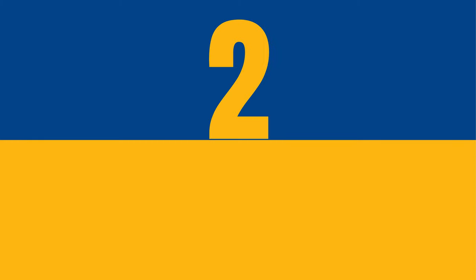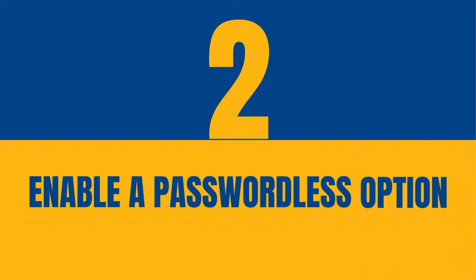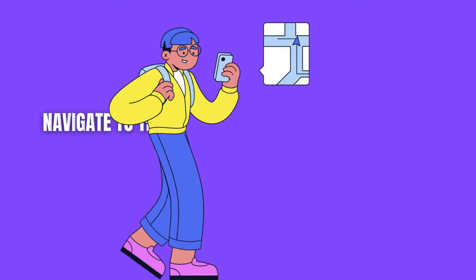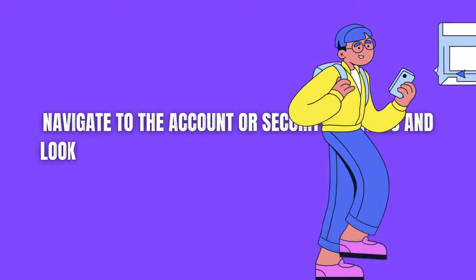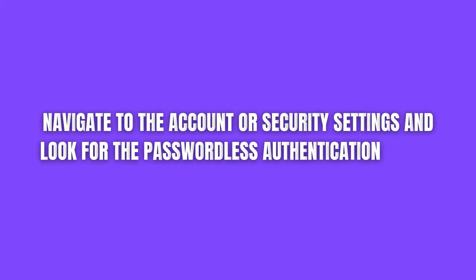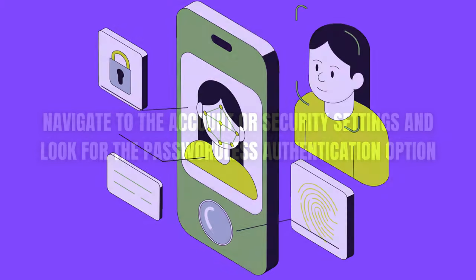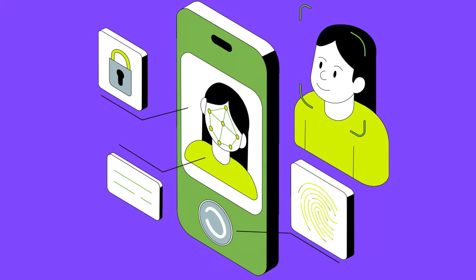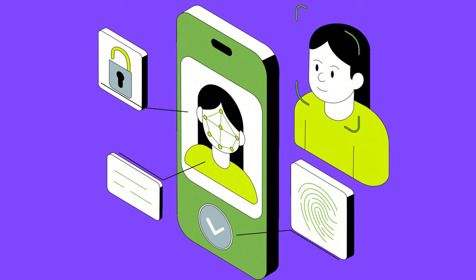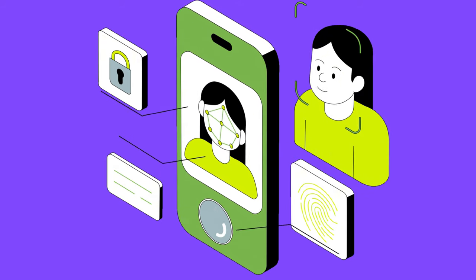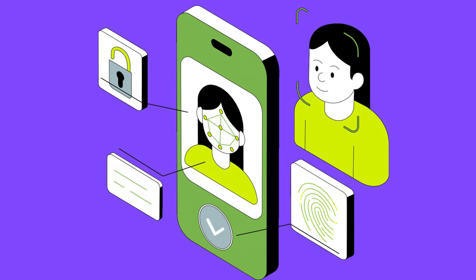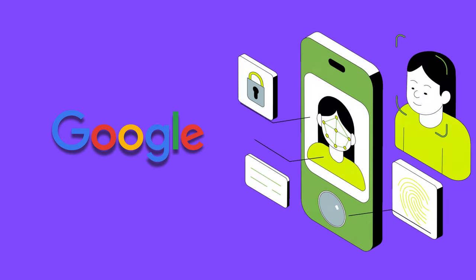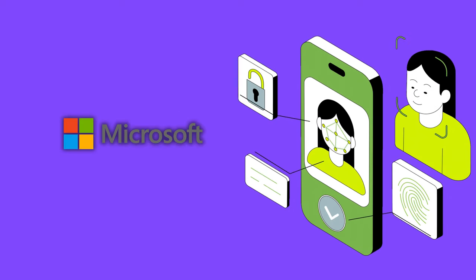Step 2: Enable a passwordless option. Navigate to the account or security settings and look for the passwordless authentication option. Common methods include enabling biometric authentication like facial recognition, or using an authentication app like Google or Microsoft Authenticator.